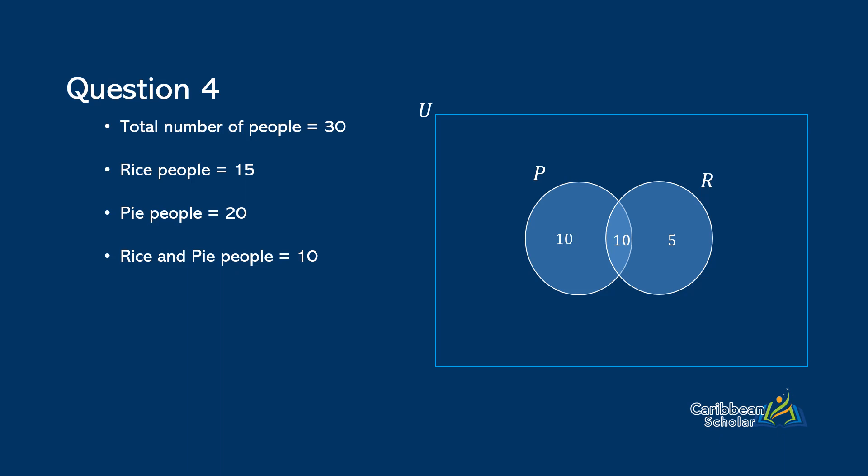Okay, so the question asks us to figure out how many people ate neither pie or rice. So that means that we are looking for the people who would sit outside of P and R, but still inside of U. So we know that there were thirty people in all. So all we need to do is take thirty and subtract it from n(P union R), which would be ten plus ten plus five. And we subtract that from thirty. And we see that thirty minus twenty five is five.